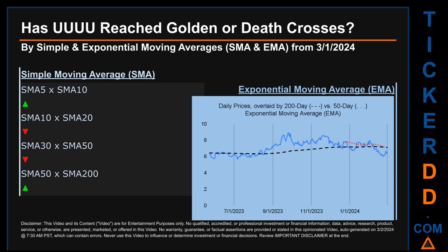Continuing with SMA, we looked across the 5-to-10, the 10-to-20, and the 30-to-50-day ranges to see if golden and death crosses had been reached. We found a golden cross signal for the 5-to-10. We found death cross signals for the 10-to-20 and the 30-to-50.